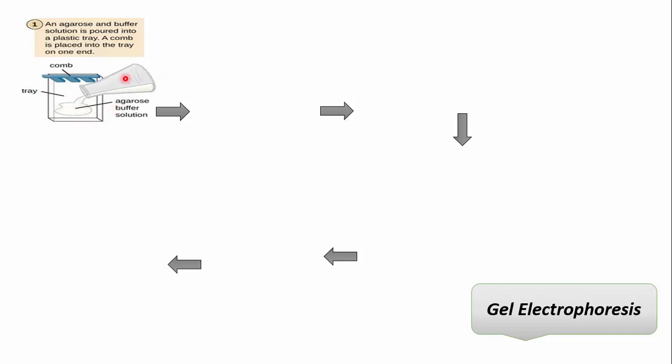Then we pour the melted agarose into the gel casting tray and place a comb. After gel solidification, we remove the comb, creating wells.